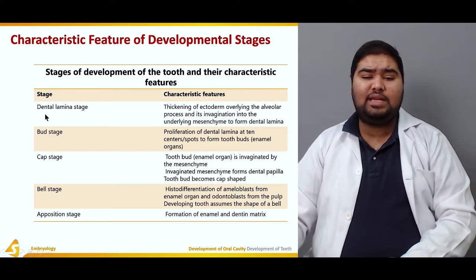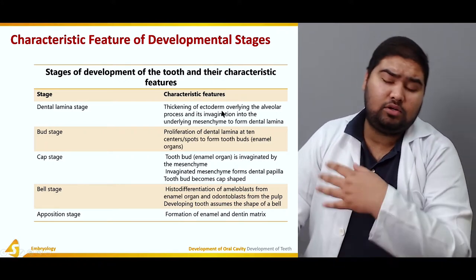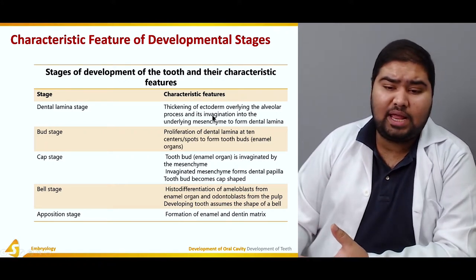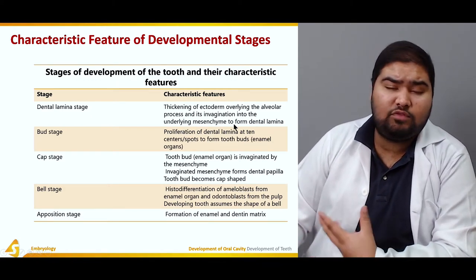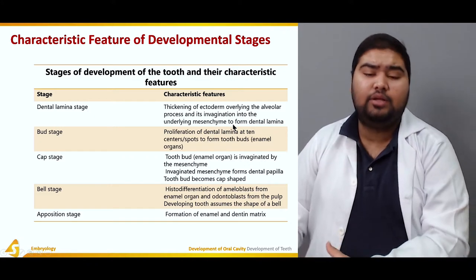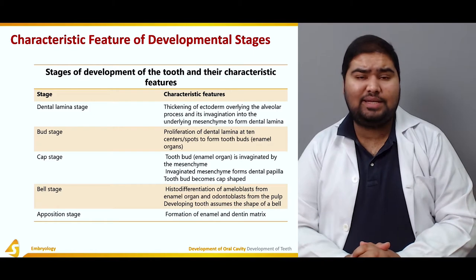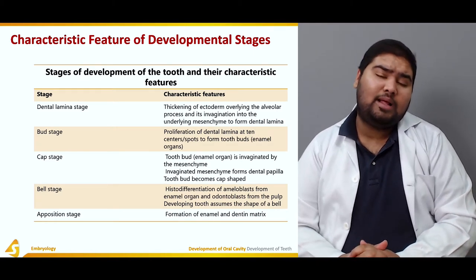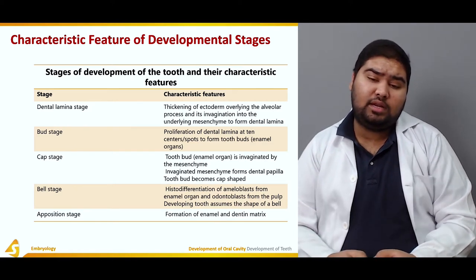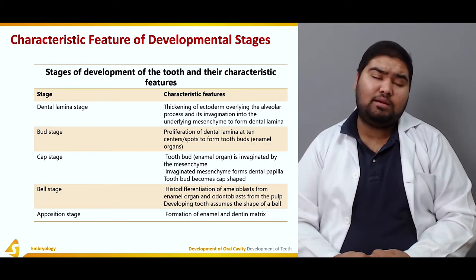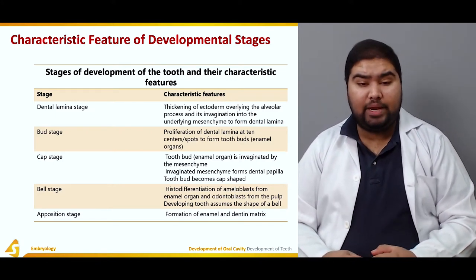In the dental lamina stage, there is thickening of the ectoderm which overlies the alveolar process. It then invaginates into the underlying mesenchyme to form the dental lamina. The ectoderm which overlies the alveolar process — that is the site at which the teeth are to be formed — undergoes thickening, and after thickening it invaginates into the underlying mesenchyme. This invagination is known as the dental lamina.